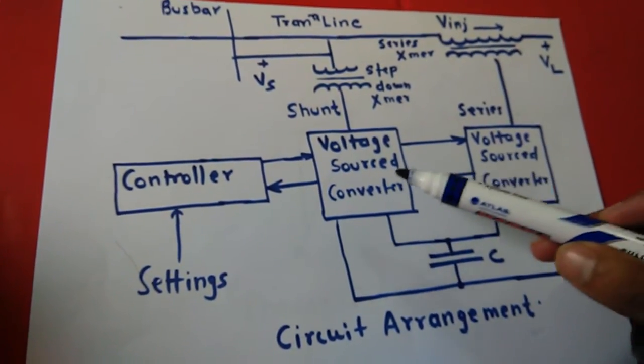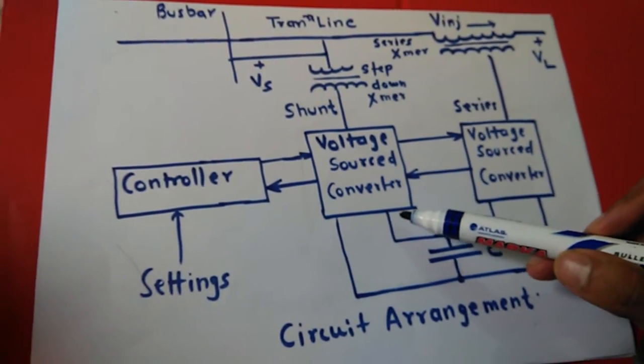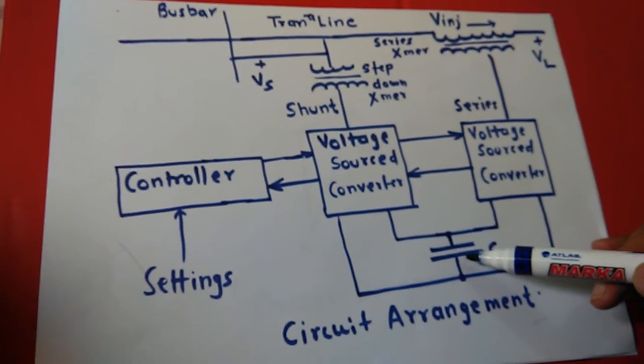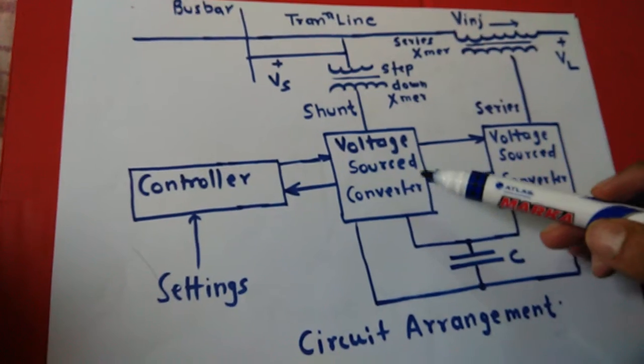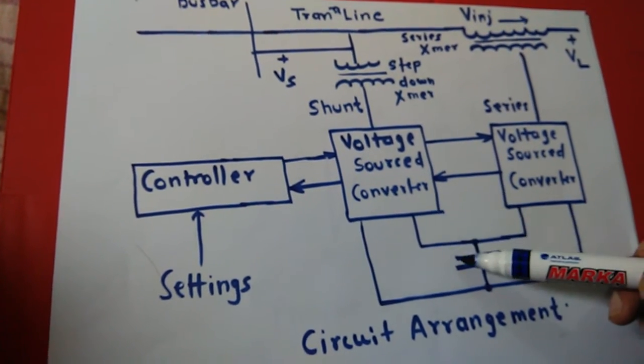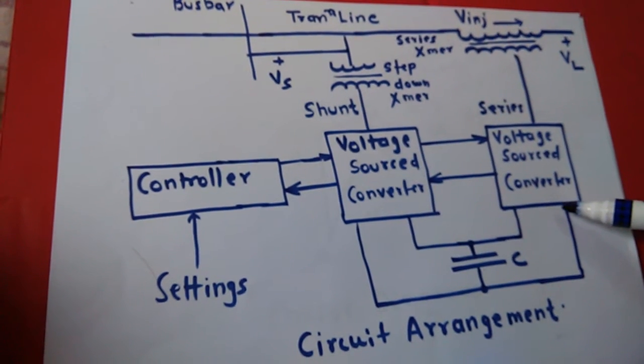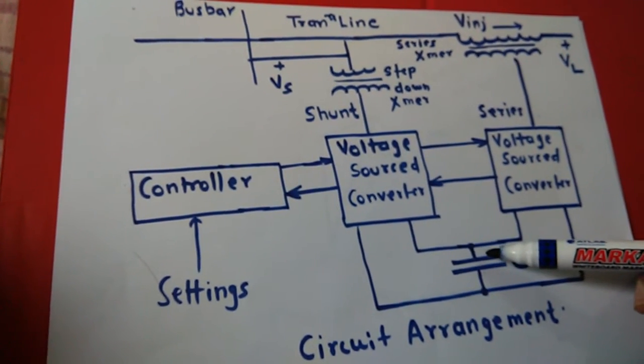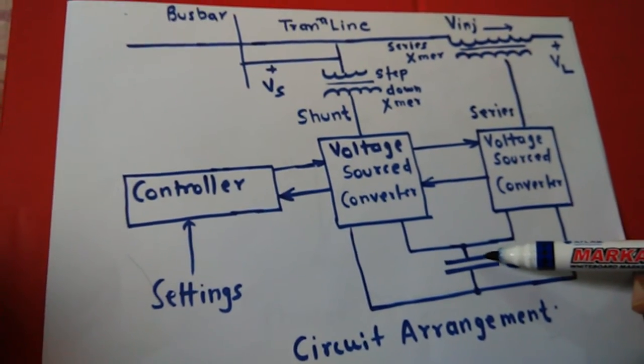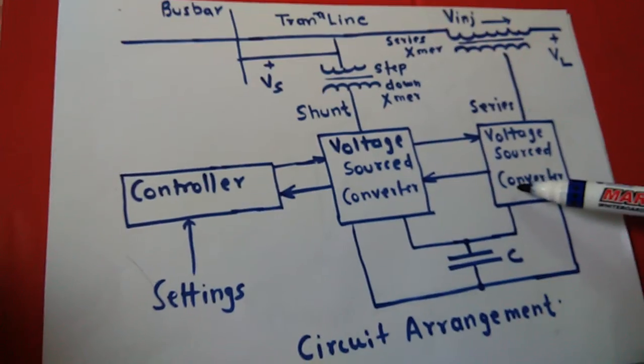UPFC consists of advanced shunt and series compensator with common DC link. This capacitor having less value storage energy so that the active power generated by voltage source converter is equal to the voltage source converter active power demanded. Otherwise, the capacitor link voltage may increase or decrease depending upon the net power absorbed by both converters.